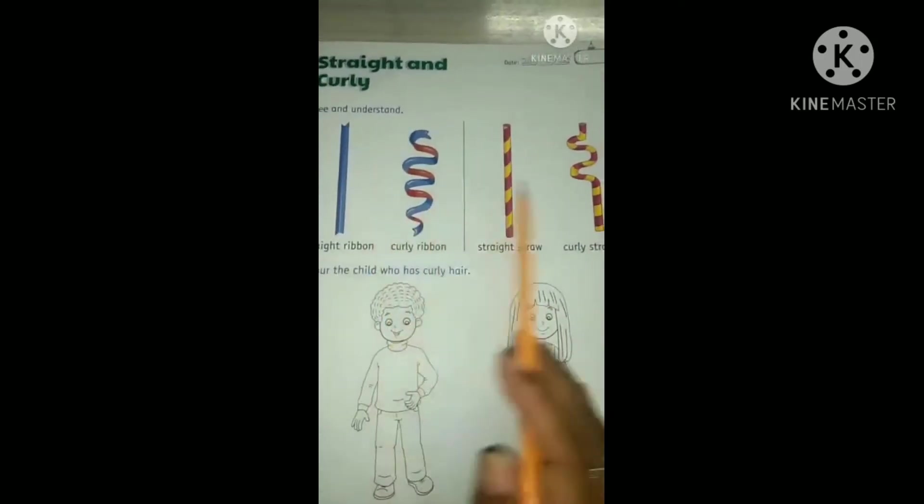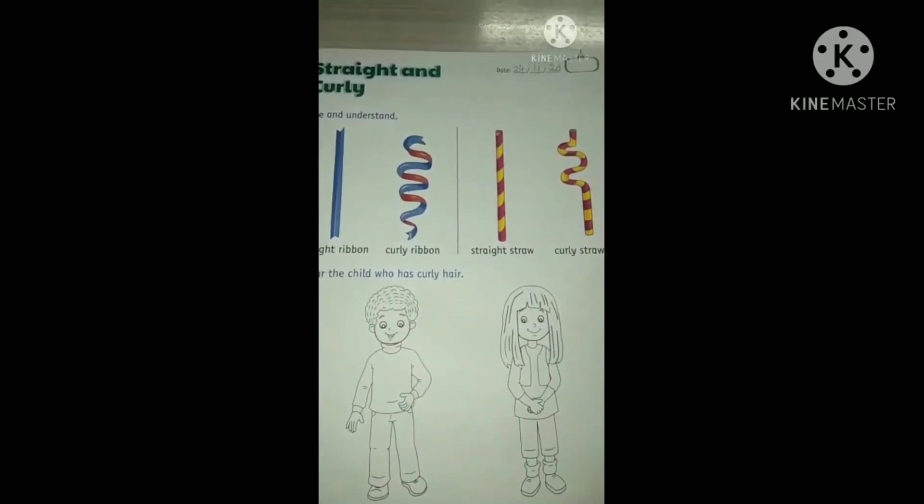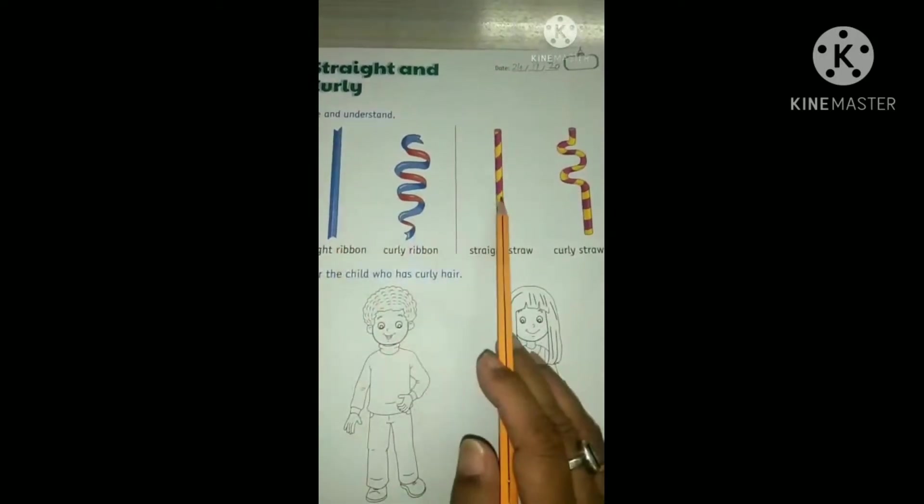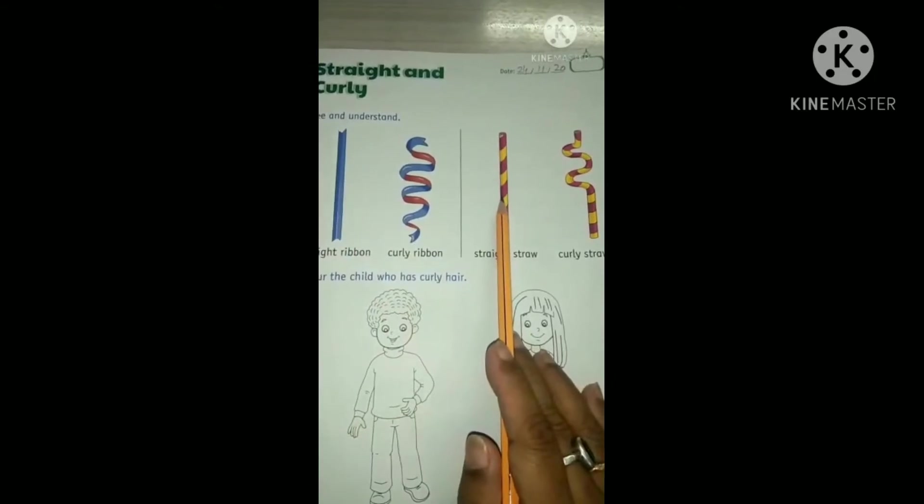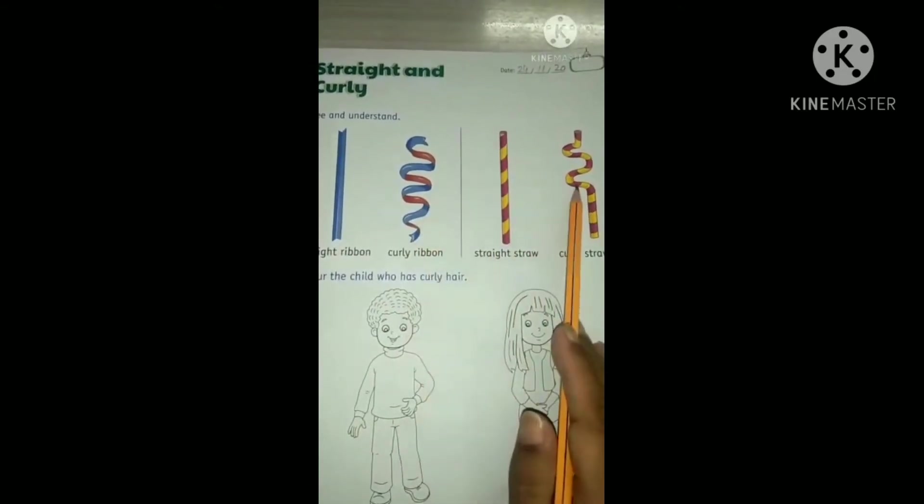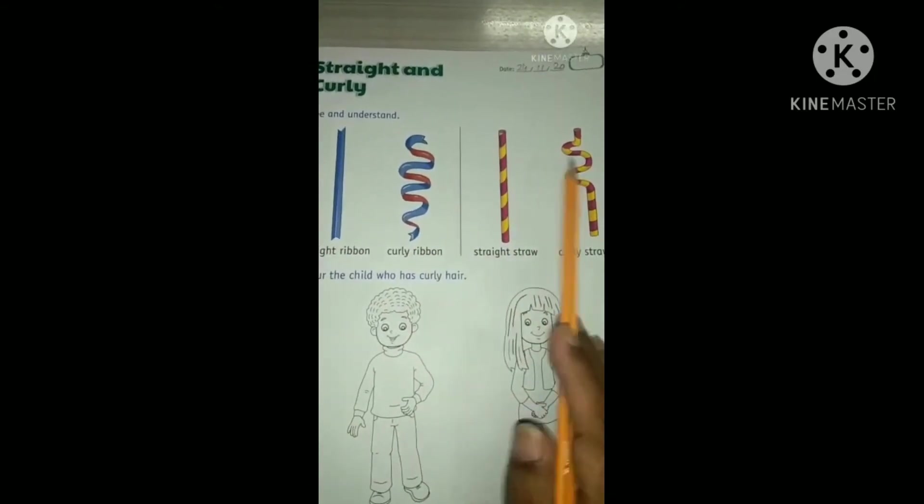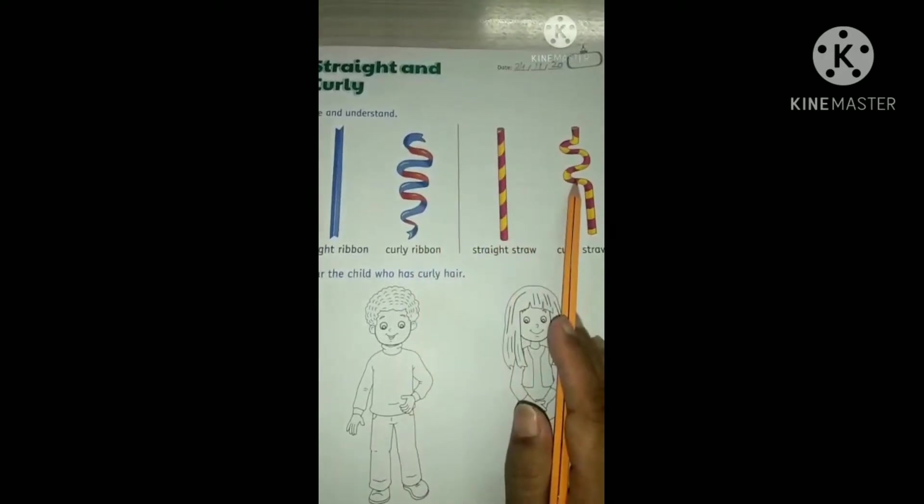So now you know which one is straight and which one is curly. See, these two are straight, these two are straight. And these two are curly, these two are curly.